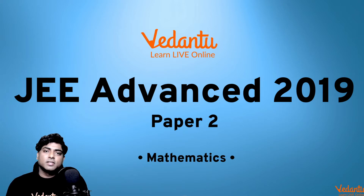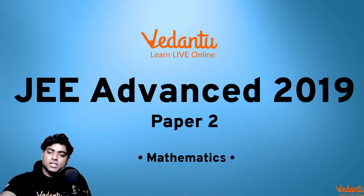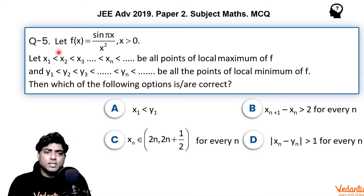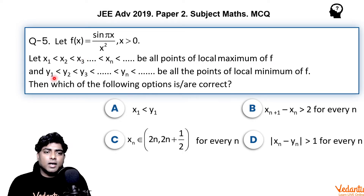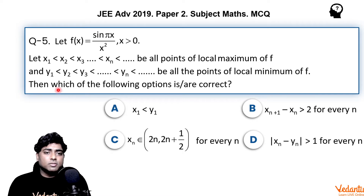The problem is related to the topic maxima-minima. The function f(x) is given as sin(πx)/x², with x greater than 0. x₁ < x₂ < x₃ ... xₙ are all its points of local maximum, and y₁ < y₂ < y₃ ... yₙ are all the points of local minimum of f(x). We need to find which of the following options are correct — more than one option can be correct.